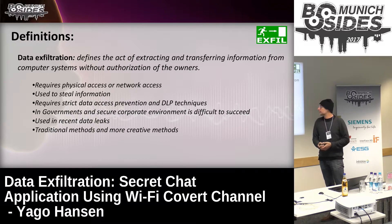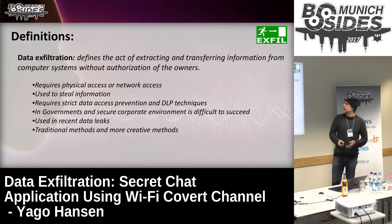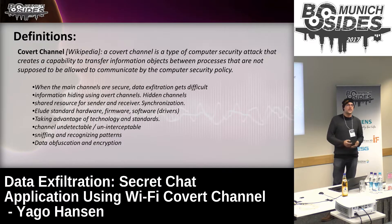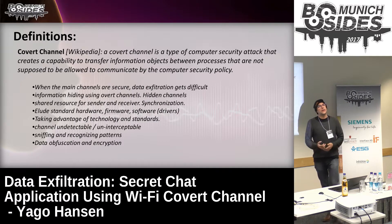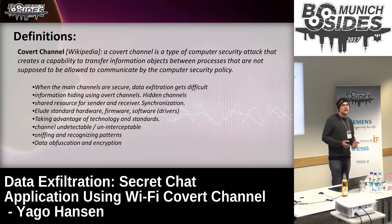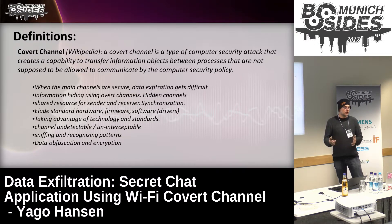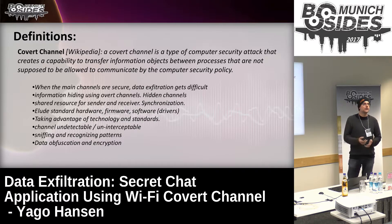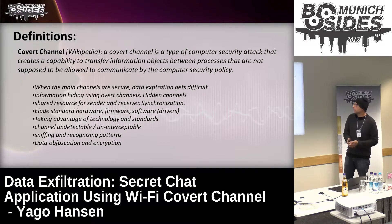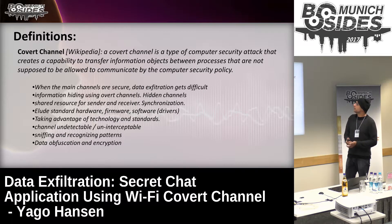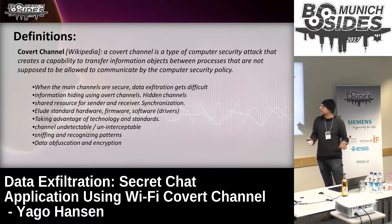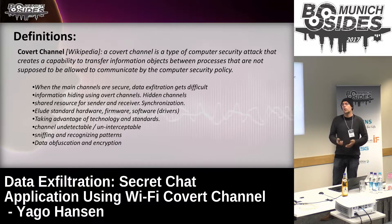Traditional methods give way to more and more creative methods. When we talk about data exfiltration and about covert channels, many of us are thinking about DNS data exfiltration, ICMP, ARP — there are a lot of protocols that in the last years have been used for data exfiltration using covert channels. It's difficult to control the transmission of data using these protocols because packets are not supposed to be doing what they are doing. So it's very difficult to control by security systems. When the main channels are secure, data exfiltration gets difficult, so you have to look into more creative ways to do it.